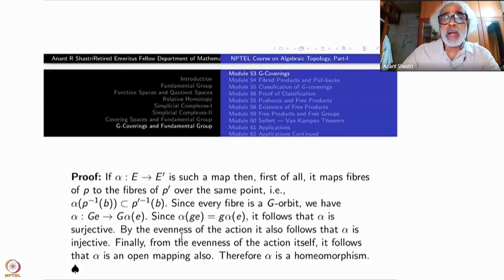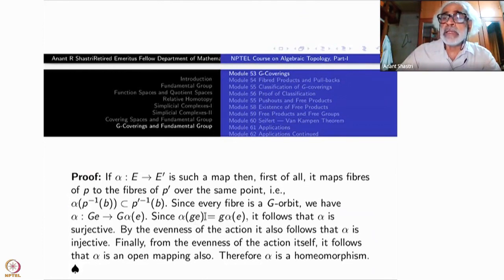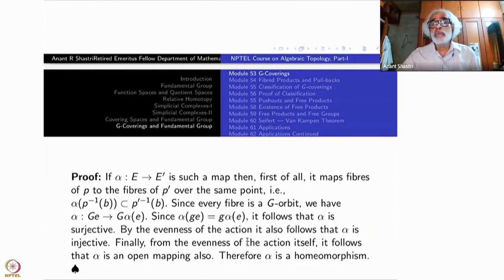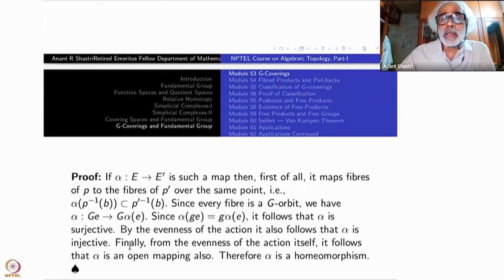The even action tells you α is also injective. Because if α(g₁·e) equals α(g₂·e), then g₁·α(e) equals g₂·α(e), so g₁ and g₂ act on the same element. By fixed-point freeness of the even action, g₁ must equal g₂. So what we have here is a bijection. Finally, the evenness of the action also tells you that it is an open mapping.